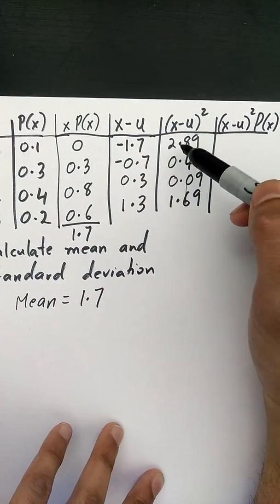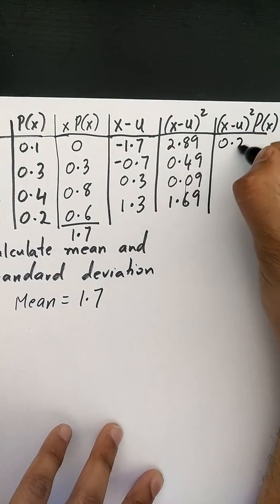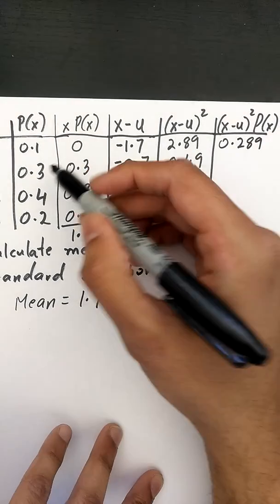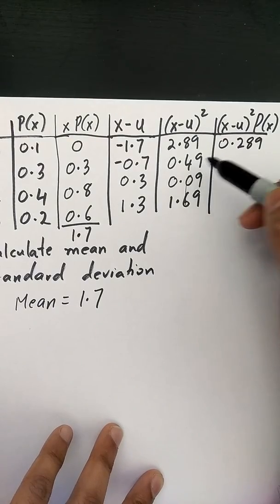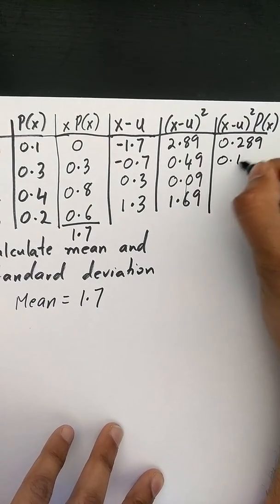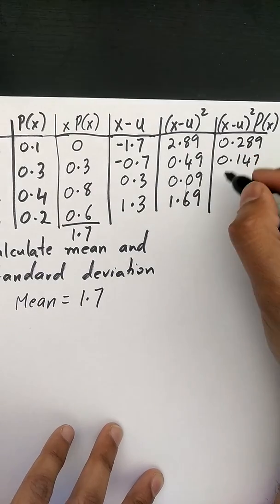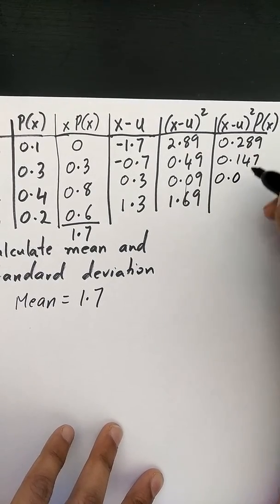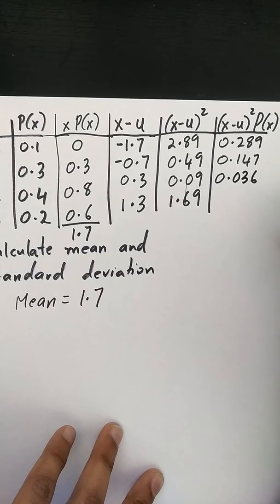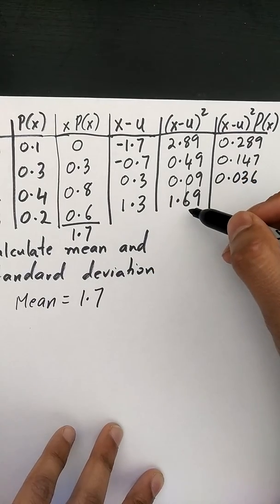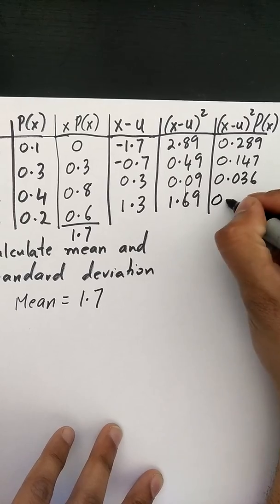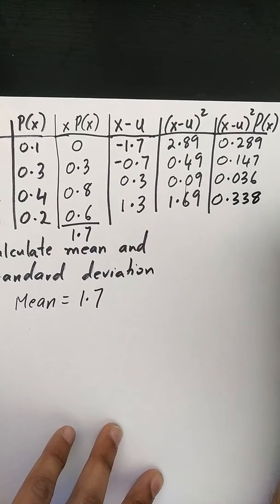So 0.1 times 2.89 is 0.289, 0.3 times 0.49 is 0.147, 0.4 times 0.09 is 0.036, and then 0.2 times 1.69 is 0.338.